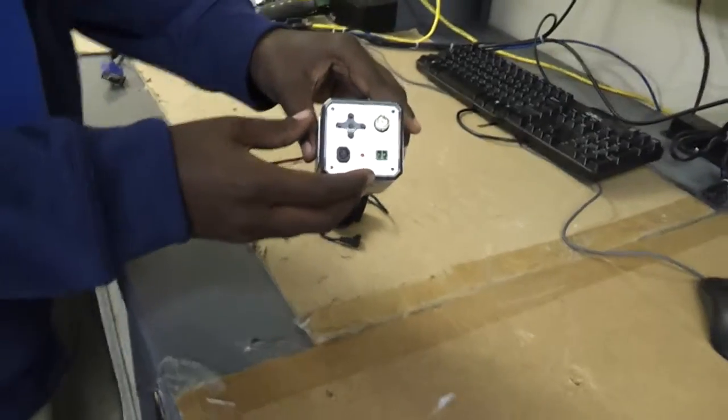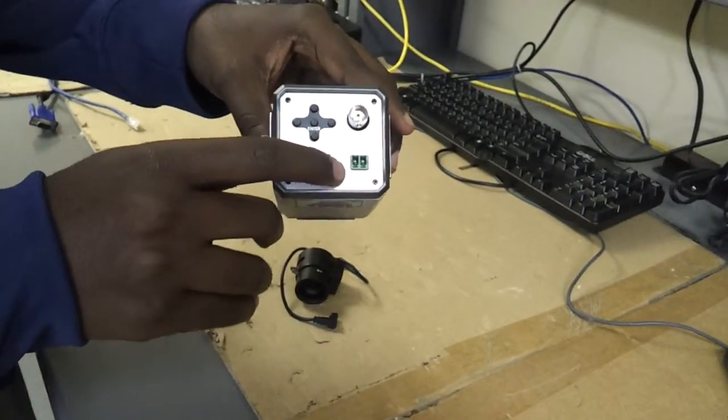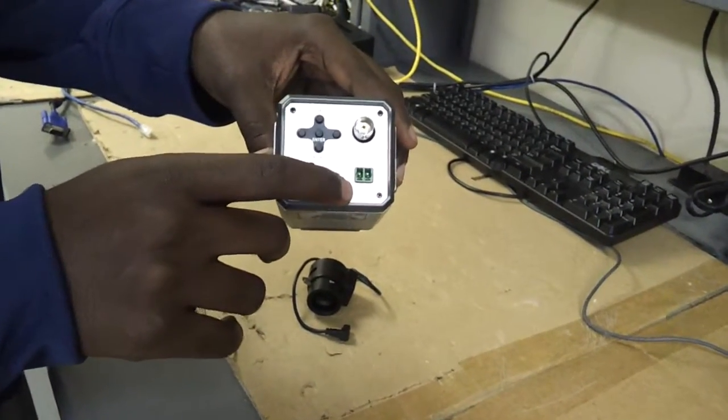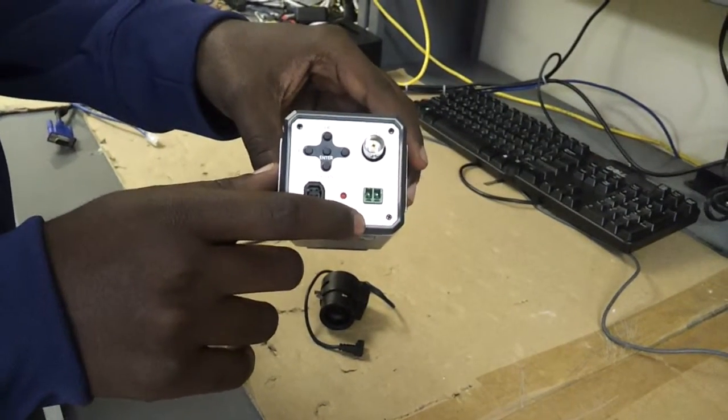As you can see, the box camera comes with the power supply. It's either 12 volt or 24, so it's a dual voltage.